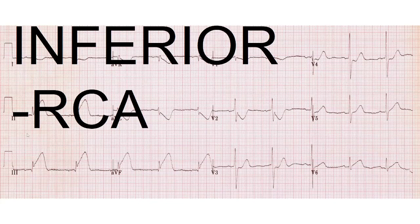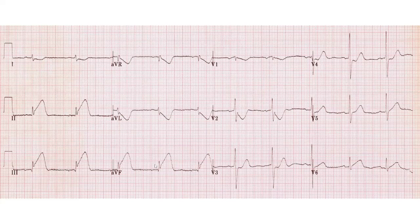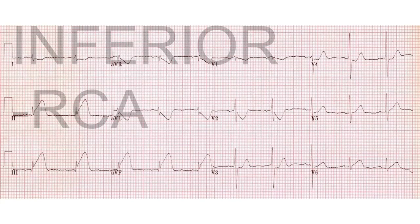Another inferior STEMI — usually a blockage of the right coronary artery. Leads two, three, and AVF show an incredible amount of ST segment elevation. Lead one and AVL have the reciprocal depression we want to see, and in V2 and a little in V1 there's ST segment depression indicating posterior involvement as well. The RCA perfuses the entirety of the conduction system, so we need to anticipate heart blocks and bradycardia. Have pads on the patient, atropine ready, pressor agents available, be very careful with nitrate therapy, establish large bore IV access, and be ready to increase preload.